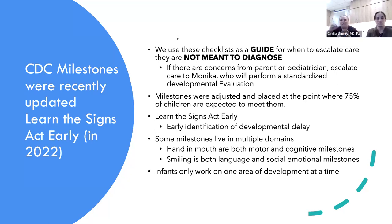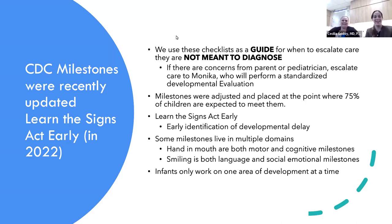For example, crawling used to be placed at seven or eight months, but it's really closer to nine or ten months because that's when 75% of kids achieve it. The reason for this change is that if a child misses a milestone, we don't say 'let's wait and see' — a missed milestone is a red flag. You learn the signs, act early, and escalate to someone who can do a standardized evaluation.